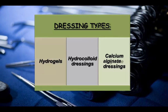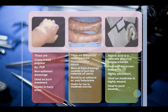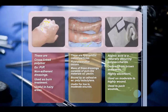Dressing types include hydrogels, hydrocolloid dressings, and calcium alginate dressings. Hydrogels are cross-linked polymers — for example, polyvinyl pyrrolidone. They are non-adherent dressings used for burn treatment and useful in hairy areas. Hydrocolloid dressings contain hydrophilic colloid particles that allow fluid absorption; their mass consists of gum-like materials such as pectin, bound by an adhesive such as polyisobutylene. They are useful for low to moderate wounds. Calcium alginate — alginic acid is a naturally occurring polysaccharide derived from brown seaweeds; highly absorbent, used on moderate to highly exuding wounds, and used to pack wounds.